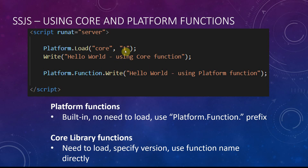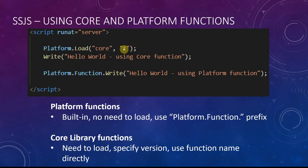Regarding version numbers for the core library — that's the second parameter in platform.load — you can specify the version such as 1, 1.1, 1.1.1, 1.1.2, 1.1.3, etc. The safest way to always load the latest version is to just use '1', which automatically fetches the latest release under version 1. So if 1.3 is launched tomorrow and you're using '1', there's no problem. However, if version 2 is released, you would need to update your code to reference version 2.